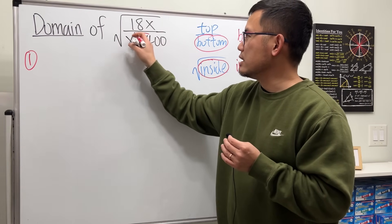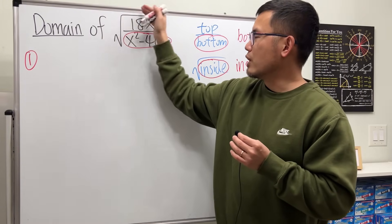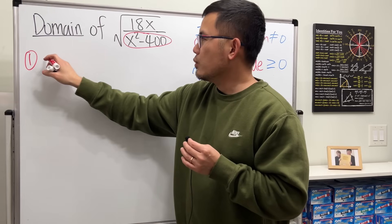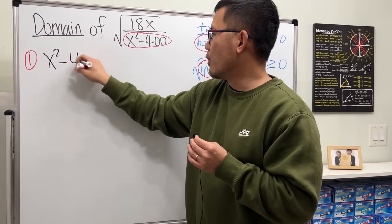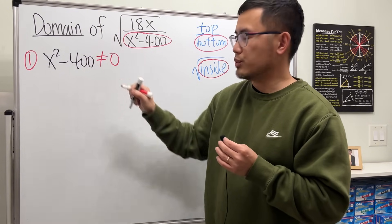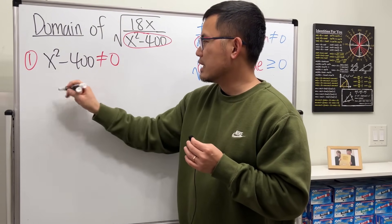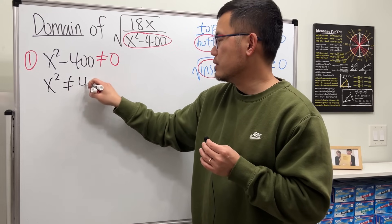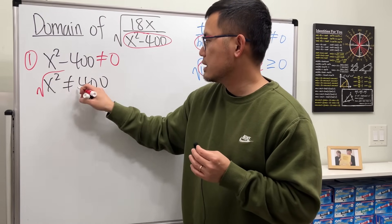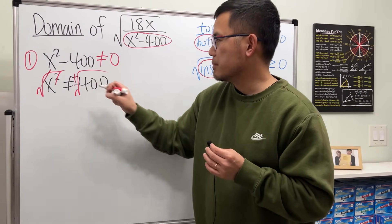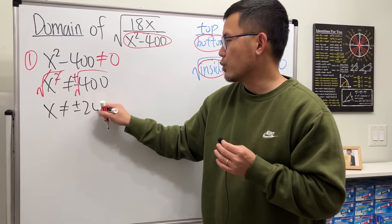Let's take care of the first part: the denominator of the rational expression, ignoring the square root for now. We set x squared minus 400 not equal to zero. Moving 400 to the other side gives x squared not equal to 400. Taking the square root of both sides: x cannot equal plus or minus 20.